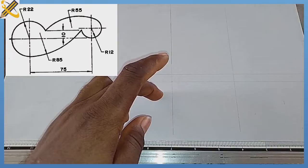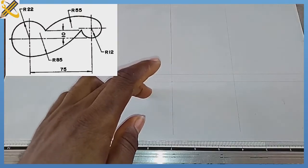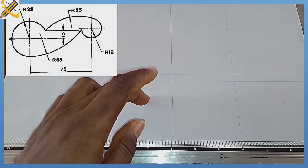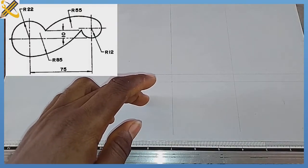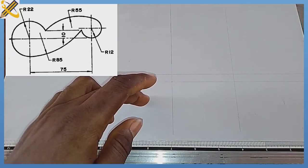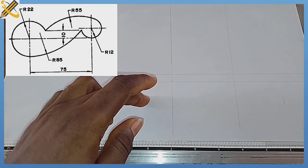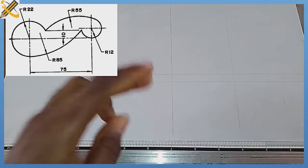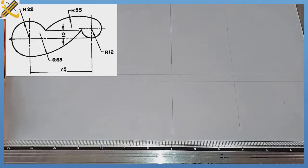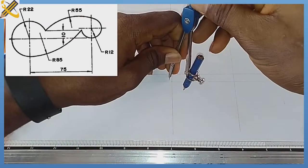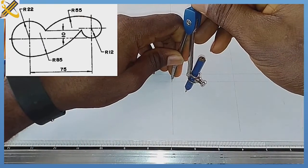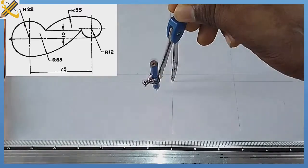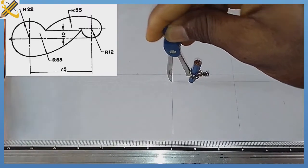Towards this area we have a circle of radius 22, so pick your compass, measure radius 22, and draw the half circle of radius 22. With my radius 22, I'm going to draw my semicircle from here.